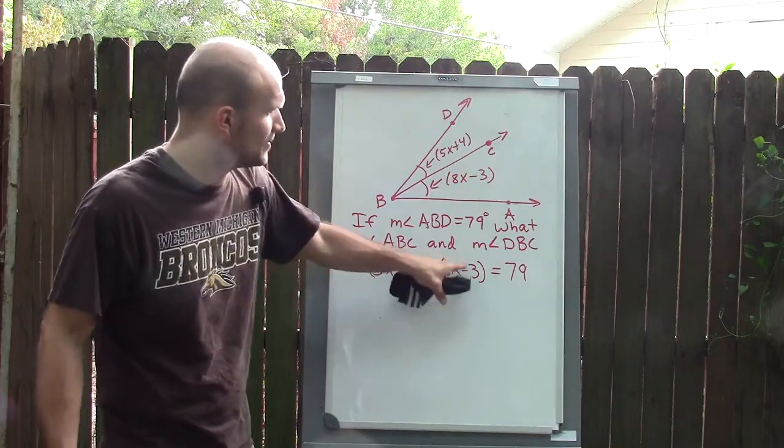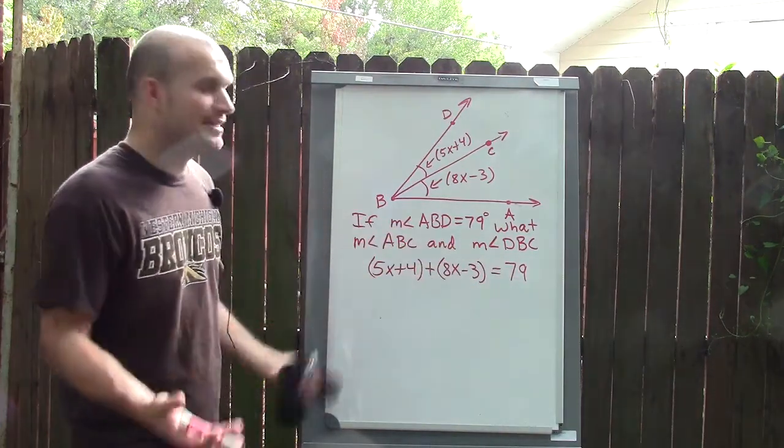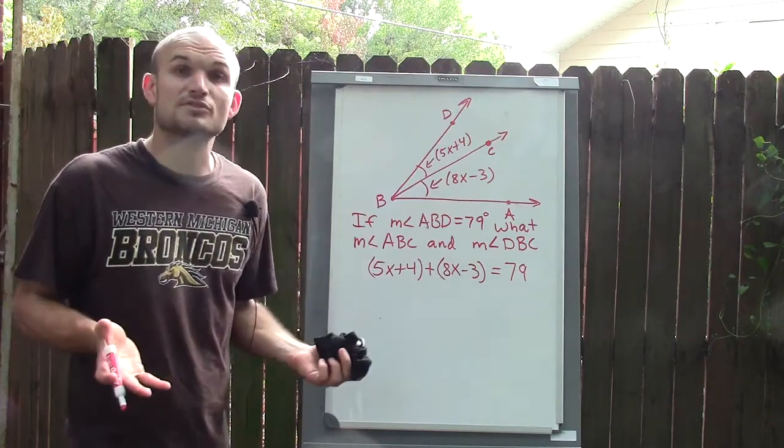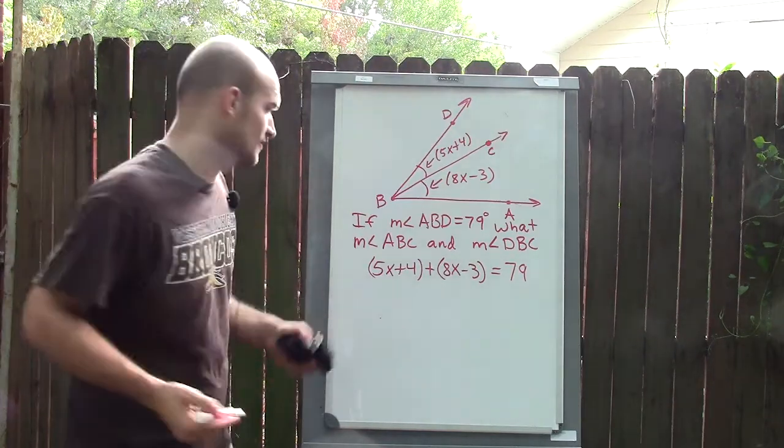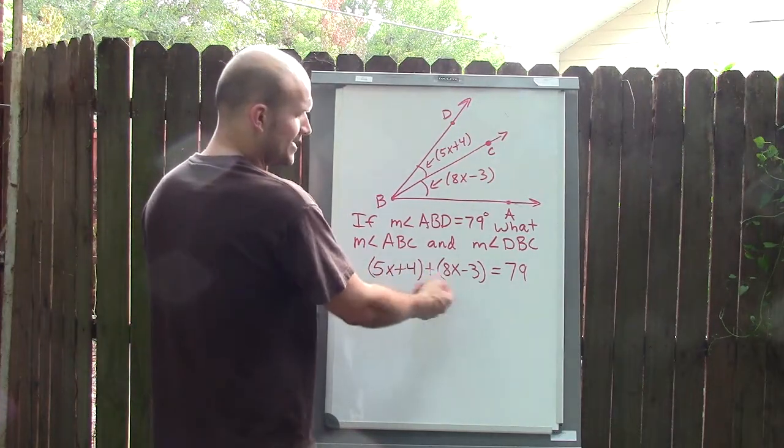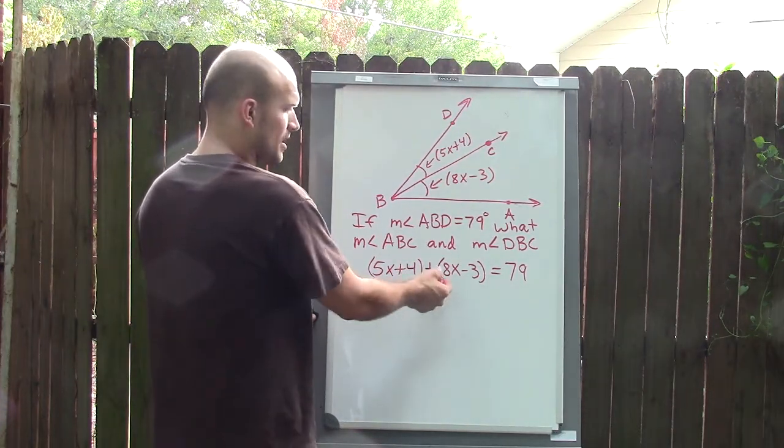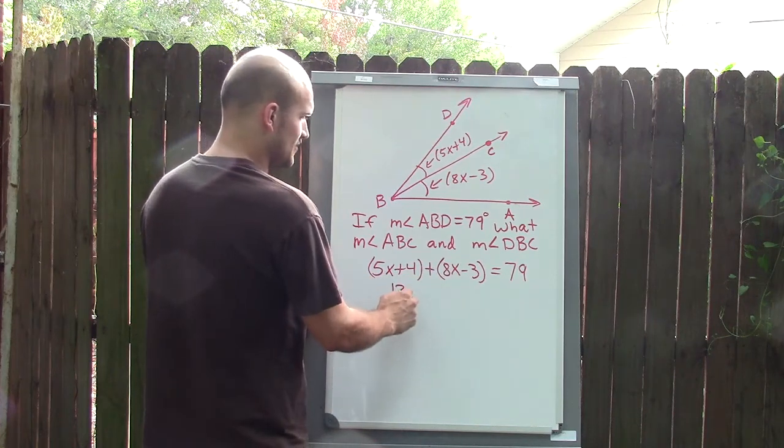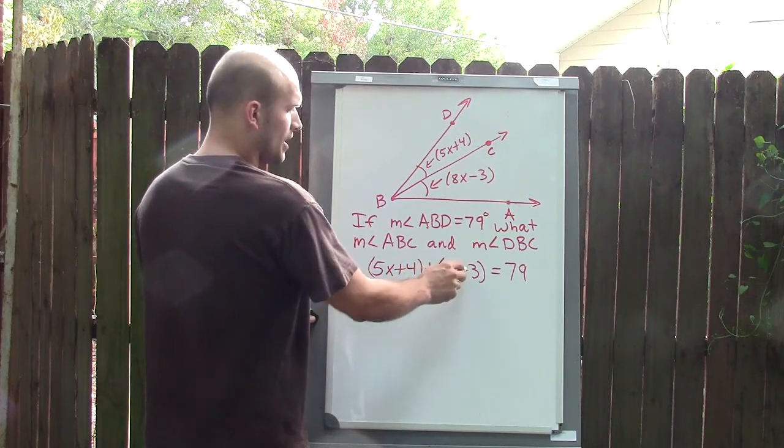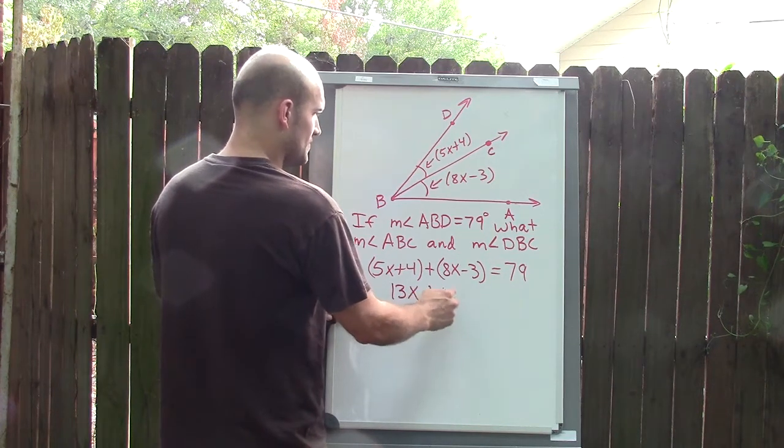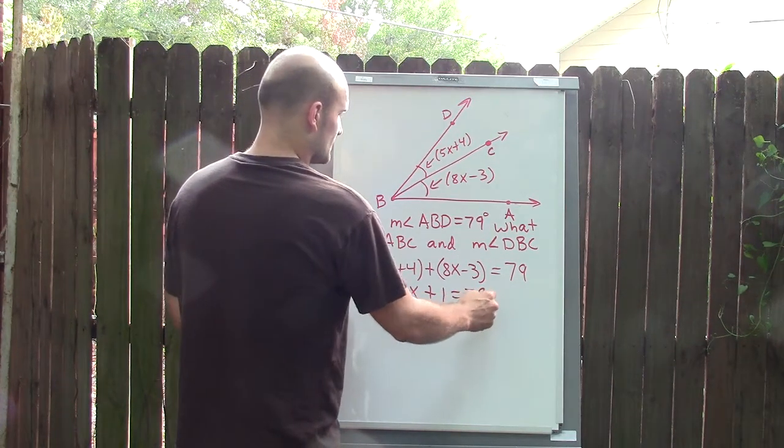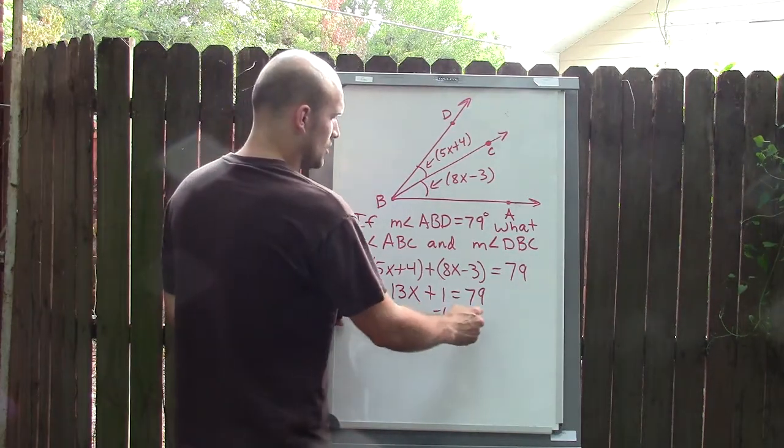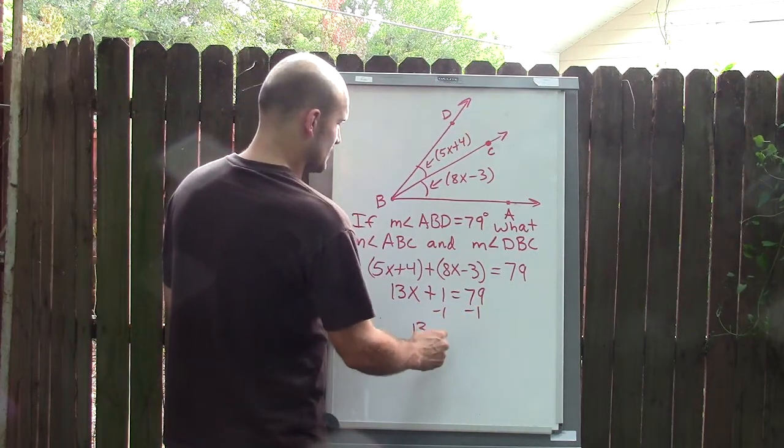What this does is this tells me that this angle plus this angle equals the total. Now let's just use our process for solving an equation to solve for X. Here, I don't really need the parentheses anymore because this is just an addition. So I can add the 5X and the 8X, which is going to give me 13X. 4 minus 3 is 1, a positive 1, equals 79. Then I'll subtract 1 from both sides and I get 13X equals 78.